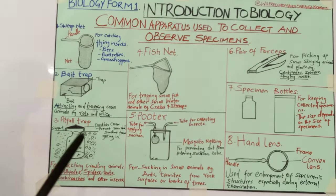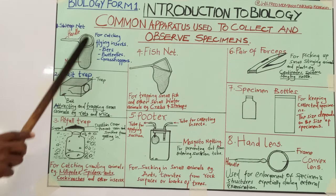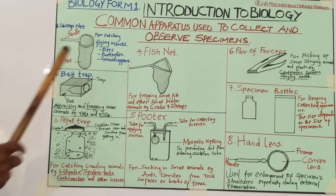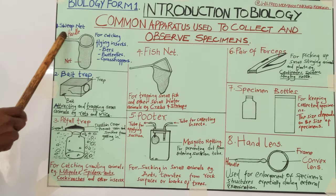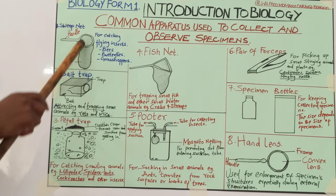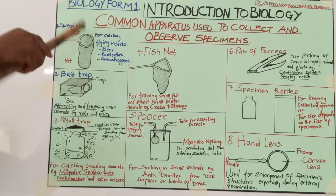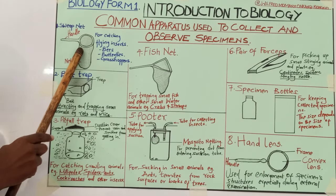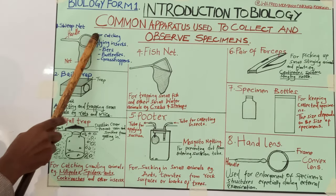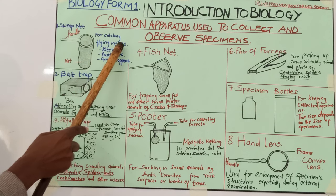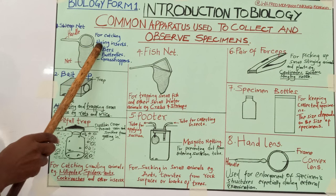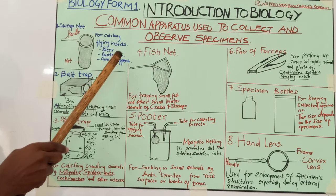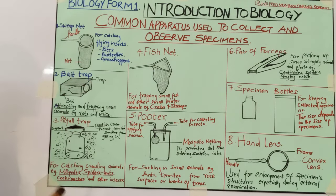The first one, number one, is the sweep net. The sweep net has a needle, it has legs, and there is a place where the specimen will enter. The sweep net is used for catching flying insects. Examples of flying insects include bees, butterflies, and grasshoppers, among others.